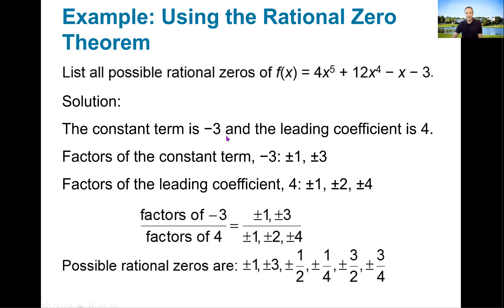The constant term is negative 3 and the leading coefficient is 4. Really, the signs are irrelevant because we'll be doing positive and negative factors. So factors of the constant term negative 3: positive and negative 1, as well as plus and minus 3. Now the factors of the leading coefficient 4: we know 1, 2, and 4 are factors — positive and negative versions of all of that. So the possible rational zeros are the factors of the constant divided by the factors of the leading coefficient — my factors of 3 divided by factors of 4.